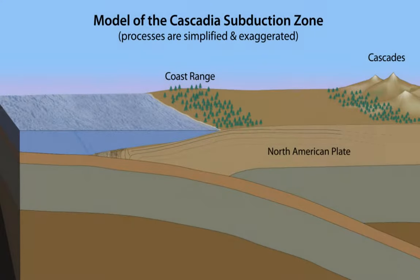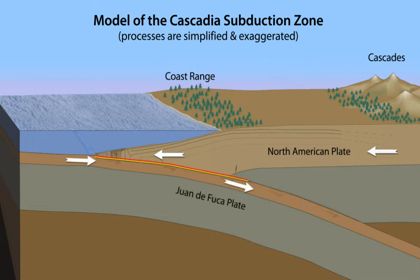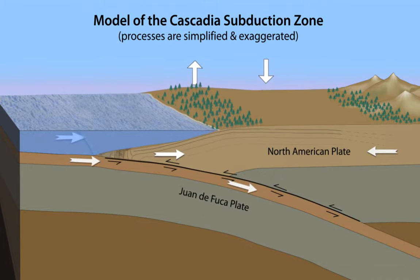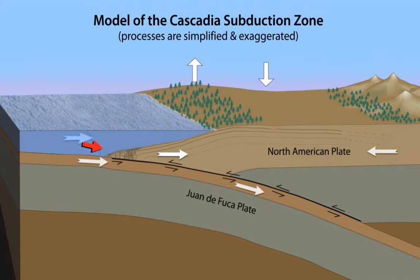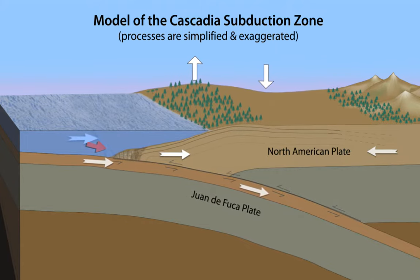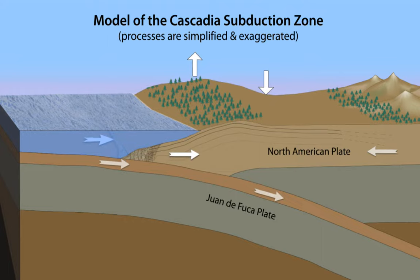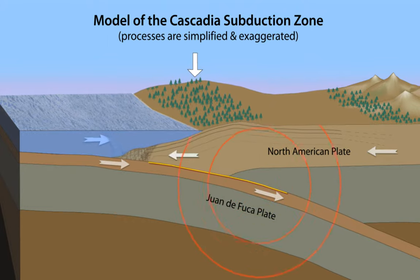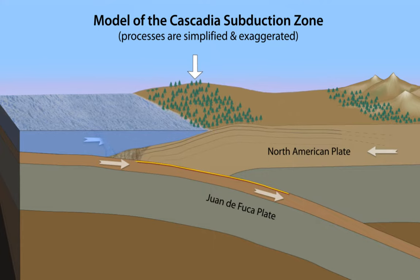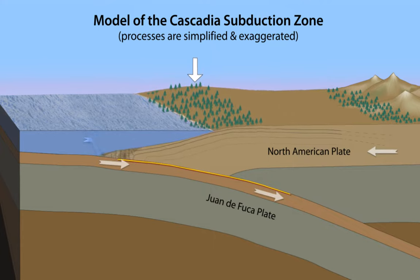In this simplified model, the North American plate in Cascadia is locked by immense friction to the subducting Juan de Fuca plate along a vast sloping fault called a megathrust. As the subducting oceanic plate pushes the leading edge of the continental plate backwards, the land is compressed and coastal areas rise. When the stress between the plates overcomes friction, the continental plate slides rapidly up the megathrust in a process called elastic rebound, dropping the coastal forests below sea level.